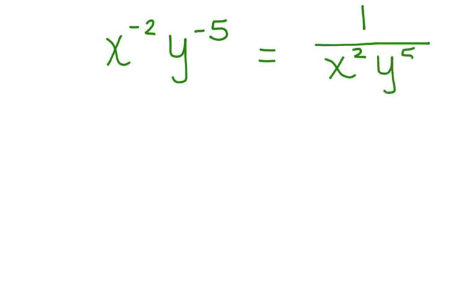Here's one more. Rewrite this without negative exponents. You can put both of them over 1, and we have x squared y to the 5th. And our work is complete.